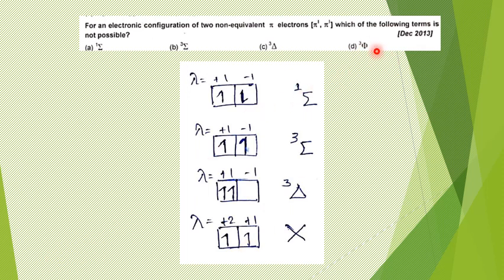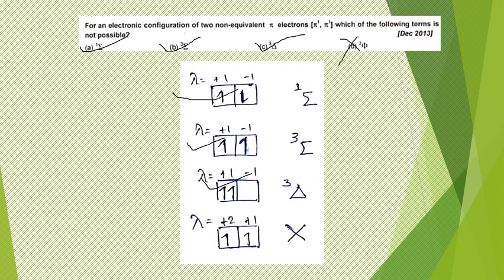For a Φ term, capital Λ must equal 3. That would require small λ values of +2 and +1. However, for π electrons, λ can only be +1 or −1, so getting Λ = 3 is not possible. The Φ term cannot arise from two π electrons. Therefore the answer is the Φ term — that is the term which is not possible.